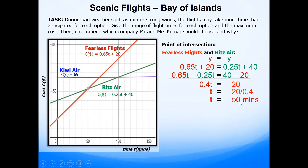T = 50 minutes is clearly seen on the graph — when the time is 50 minutes the two lines intersect. Then we need the value of the cost. The question says give the maximum cost for each section where it's cheapest. From the graph, the red line is cheapest from 0 to 50 minutes, so T = 50 gives the maximum cost for Fearless Flights.